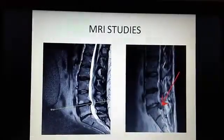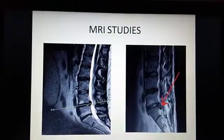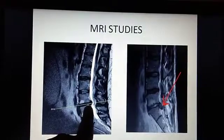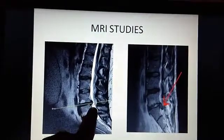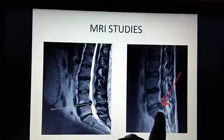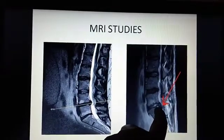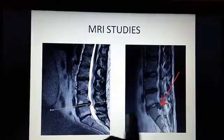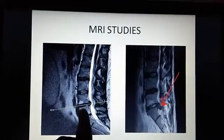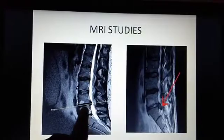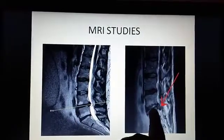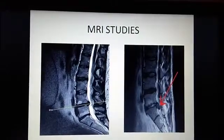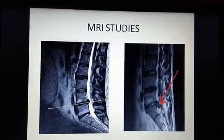Looking at an MRI of IVDP, you can see the disc coming out posteriorly towards the spine, as marked here. There is also a bulge visible. The blackish and whitish areas on the MRI indicate the healthiness of the disc — here you can see the disc health is slightly reduced.